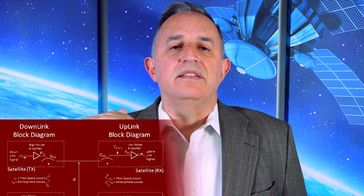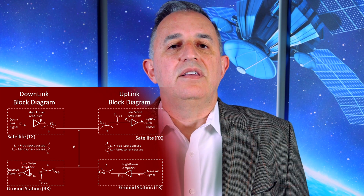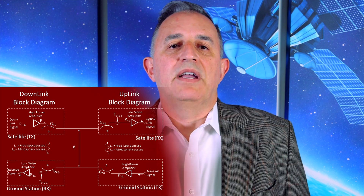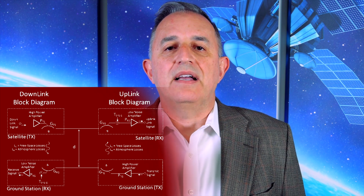Why is G over T important? It affects your link budget. A low G over T receive antenna will have the ability to receive lower data rates from a satellite connection. For example, if your phased array has a G over T of 10 dB per Kelvin, you can receive a certain data rate depending on the satellite's transmit power and distance. But if you increase your G over T to 16 dB per Kelvin, you'll be able to receive higher data rates. Higher G over T is better for higher data rates.